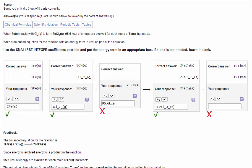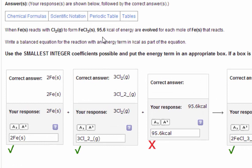This one here, all of the formulas are correct except you did not place the heat term in the correct location. So the problem reads 95.6 kilocalories are evolved, evolved meaning liberated, came about for each mole of iron.